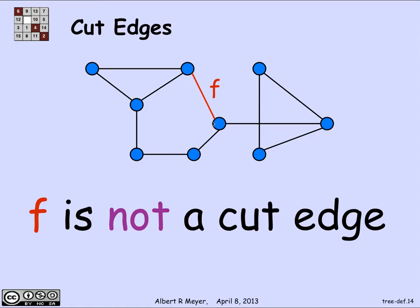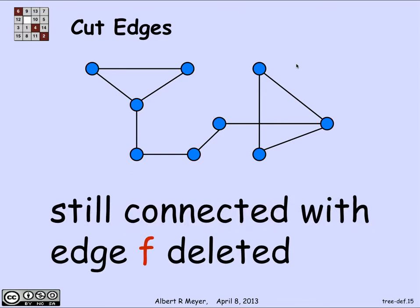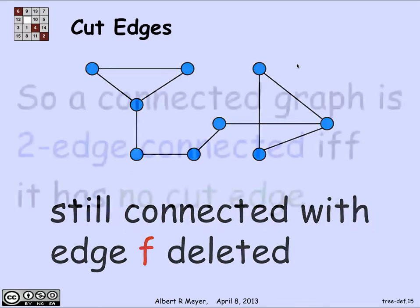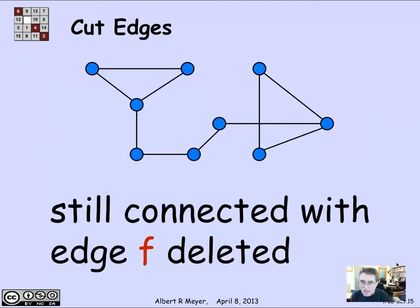F is not a cut edge because even if I delete edge F, there is still a path from every vertex to every other vertex, so F is not disconnecting anything — the graph is still connected after you delete it.